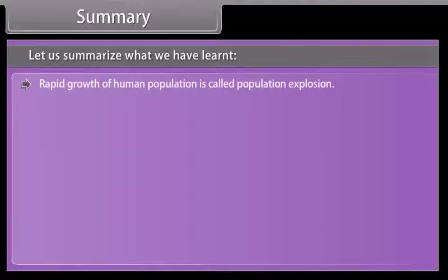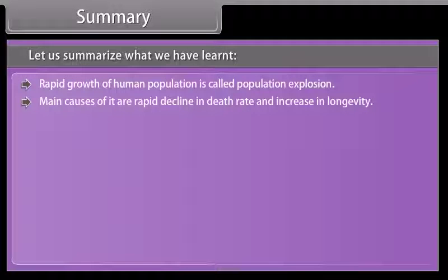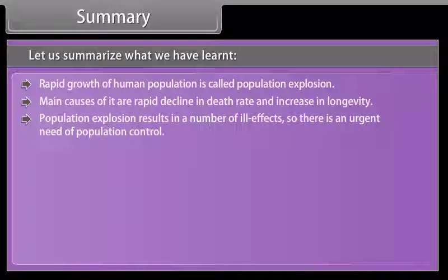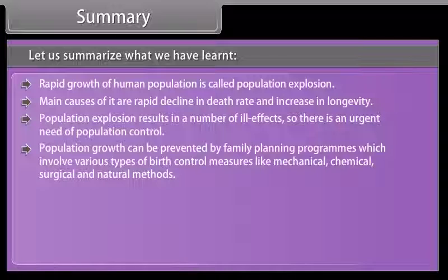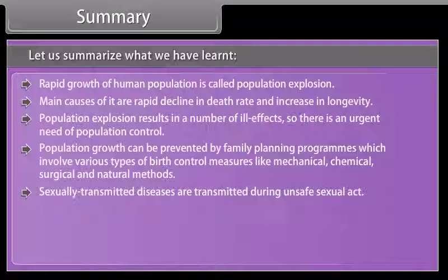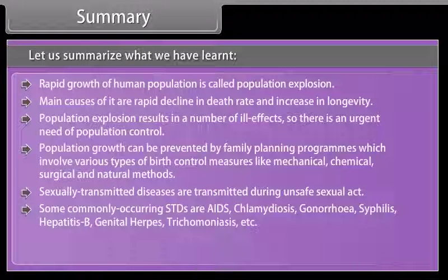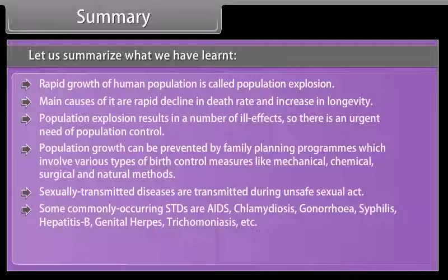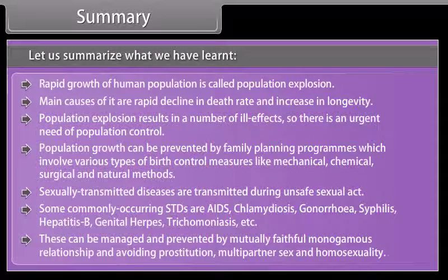Summary: Rapid growth of human population is called population explosion. Its main causes are a rapid decline in death rate and increase in longevity. Population explosion results in a number of ill effects, so there is an urgent need for population control. Population growth can be prevented by family planning programs involving mechanical, chemical, surgical, and natural birth control methods. Sexually transmitted diseases are transmitted during unsafe sexual acts; common STDs include AIDS, Chlamydiosis, Gonorrhea, Syphilis, Hepatitis B, Genital Herpes, and Trichomoniasis. These can be managed and prevented by mutually faithful monogamous relationships and avoiding multi-partner sex.